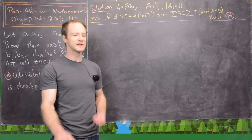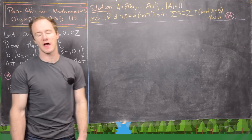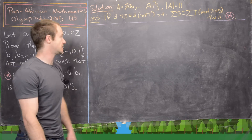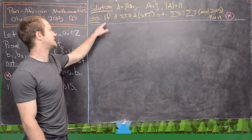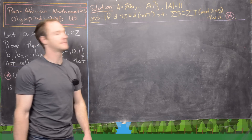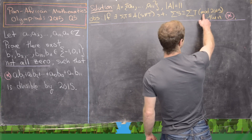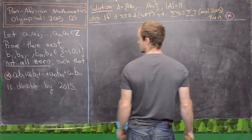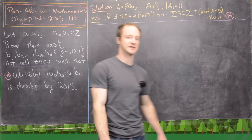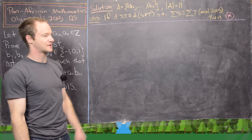On the previous board, we built all the tools necessary to finish the solution. We're setting A equal to {A1, ..., A11}, only considering the case where the A_i are distinct, making |A| = 11. We proved the observation: if there exist subsets S and T of A with S ≠ T such that σ(S) ≡ σ(T) mod 2015, then condition ★ is satisfied — we can find B_i values so that A1·B1 + ... + A11·B11 is divisible by 2015. So we only need to prove the hypothesis of this observation.